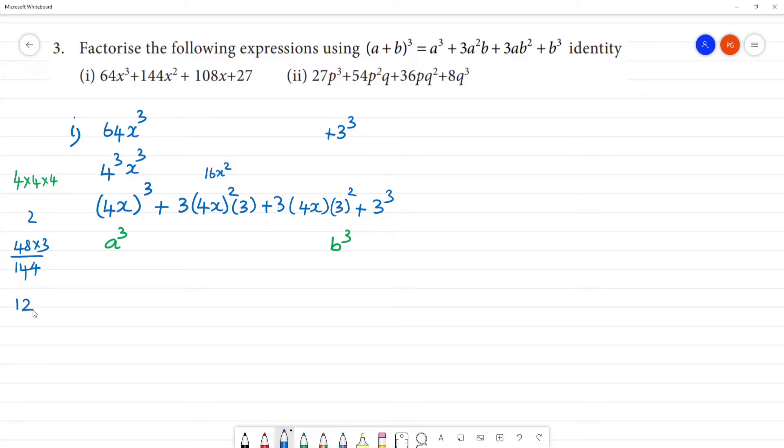And here we have 3 times 4 equals 12. 3² is 9. 12 multiplied by 9 is 108. So 108x, and 3³ is 27.